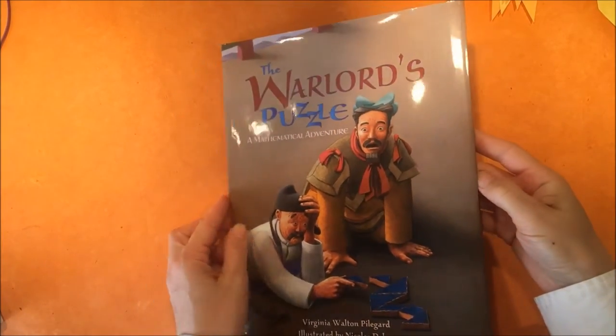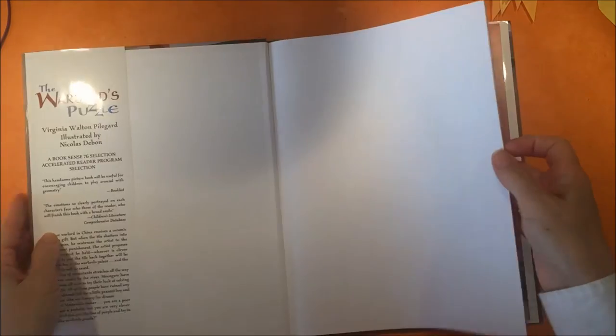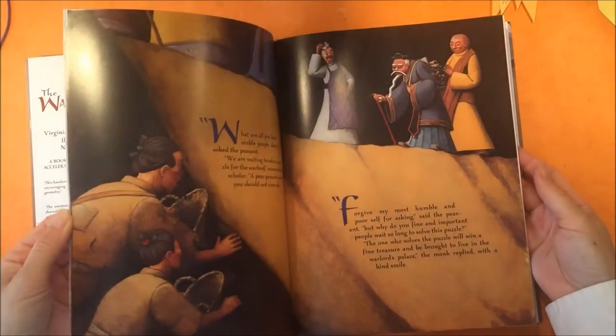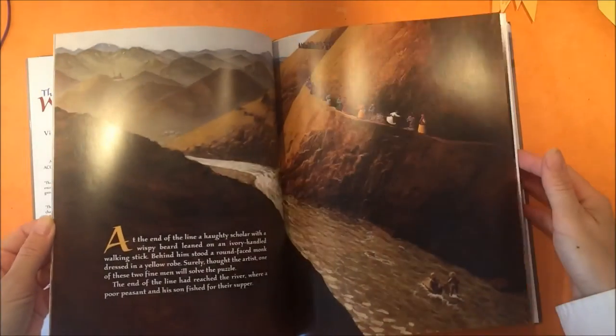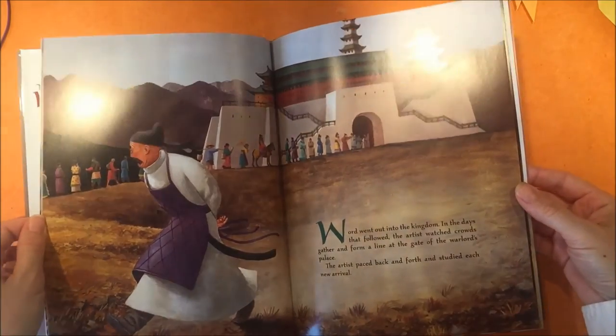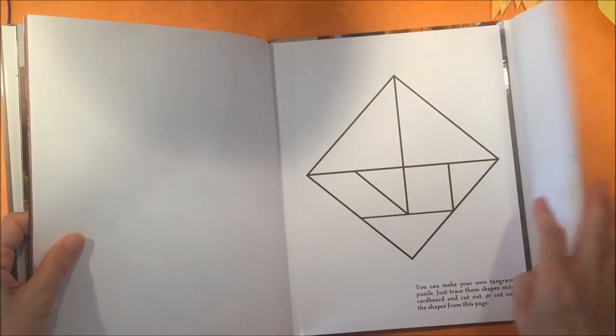We were reading this book called The Warlord's Puzzle, which is a book about an ancient Chinese warlord who receives a gift, which is a blue tile that falls onto the floor and cracks into seven pieces.